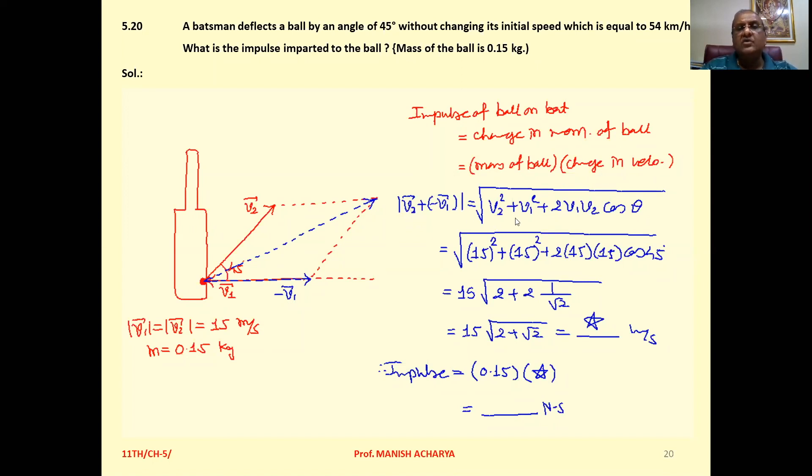So magnitude of V2 minus V1. That is under root V2 square plus V1 square plus 2 V1 V2 cos theta. So 15 square plus 15 square plus 2 times 15 into 15 cos 45 whole raise to 1 by 2. So take 15 common. So 15 into under root 2 plus 2 into 1 upon root 2. Now solve this one. You will get the change in velocity.